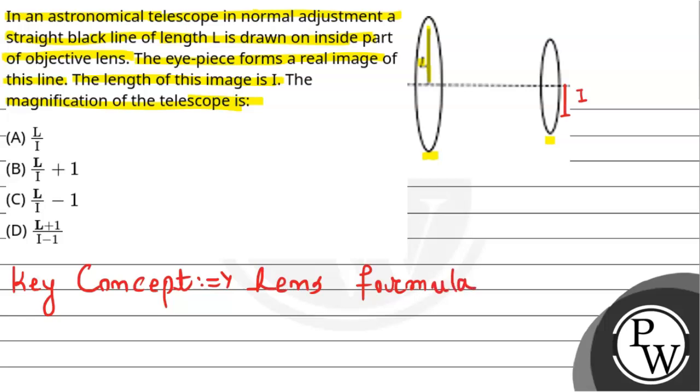The lens formula states that 1/V minus 1/U equals 1/F, where V is image distance, U is object distance, and F is focal length. Similarly, the angular magnification for an astronomical telescope equals F_O divided by F_E, where F_O is the focal length of the objective lens and F_E is the focal length of the eyepiece.